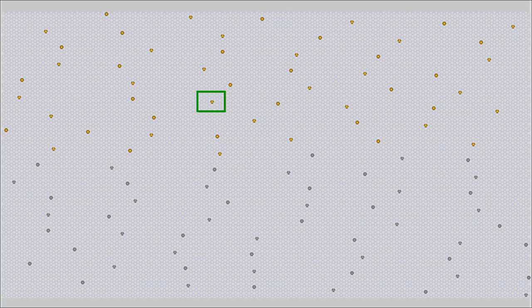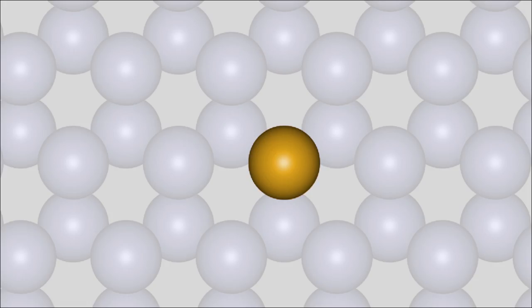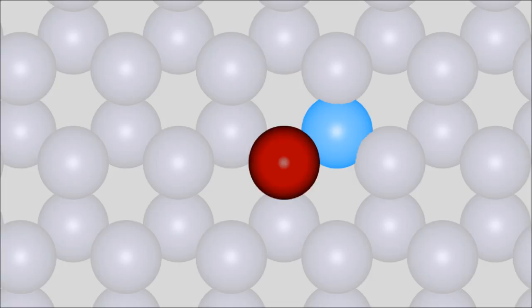Let's have a look at an impurity atom inside of the upper N-doped half. As explained in the video about doping of semiconductors, the pentavalent impurity atom inside of the silicon crystal has one extra electron which is just weakly bound to the atomic core. This electron can move into the shell of a nearby silicon atom, by which a positively charged impurity ion and a negatively charged silicon ion are formed. The positively charged impurity ion is marked with dark red color and the negatively charged silicon ion is drawn as a light blue ball.